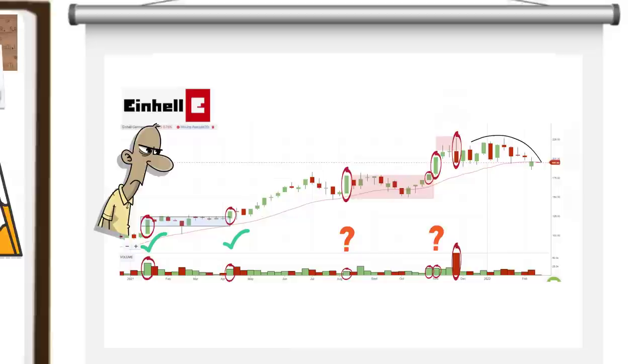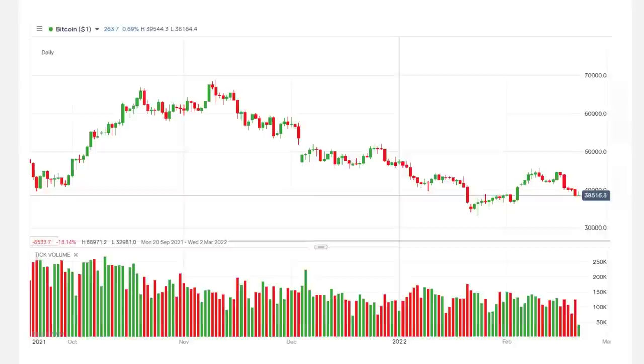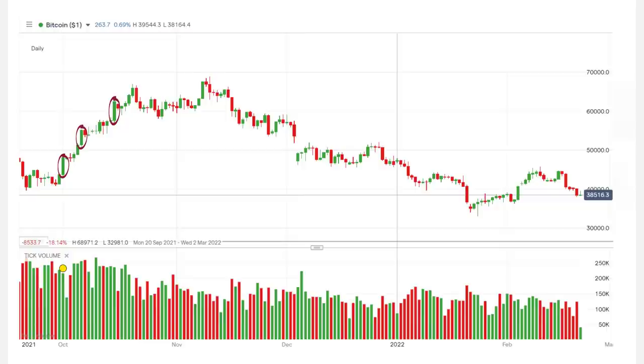We can also look for clues on a different asset class on a lower time frame. Let's look at bitcoin on the daily chart for example. Again, we look for the big candles, and here we see there is an uptrend, each with volume above 200,000, suggesting that there is no cause to doubt the move.